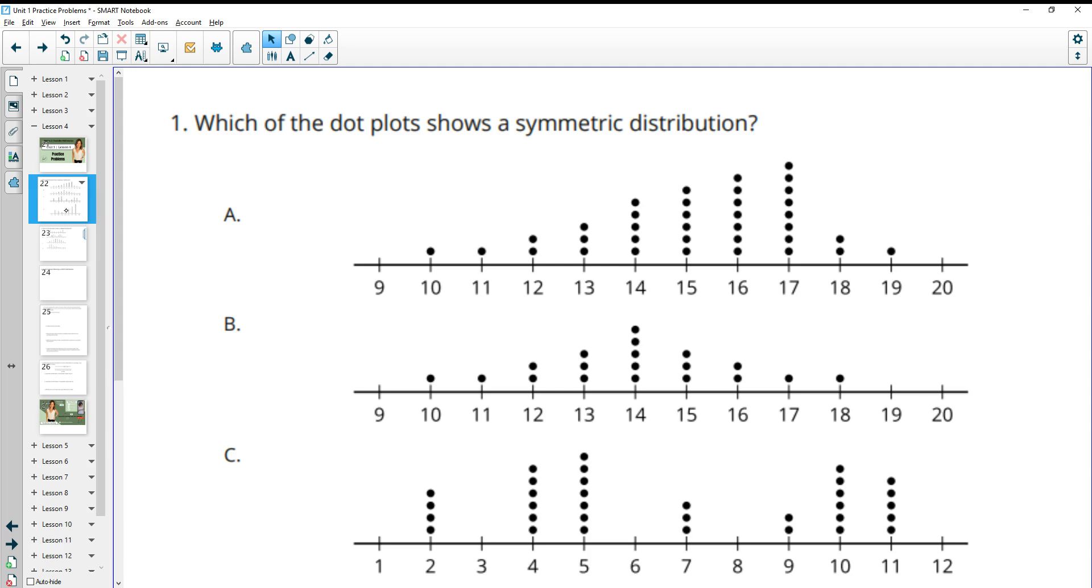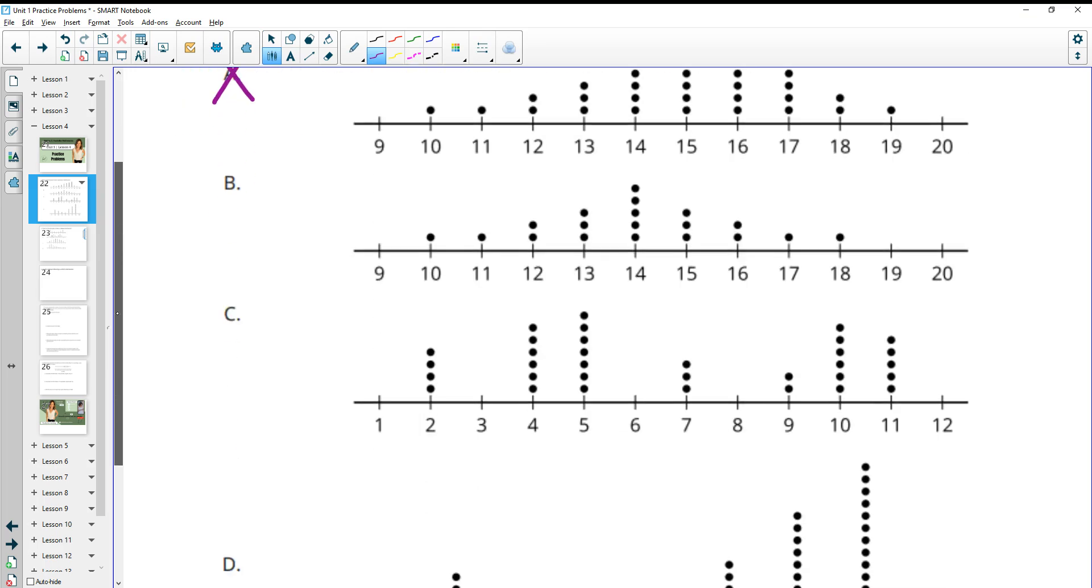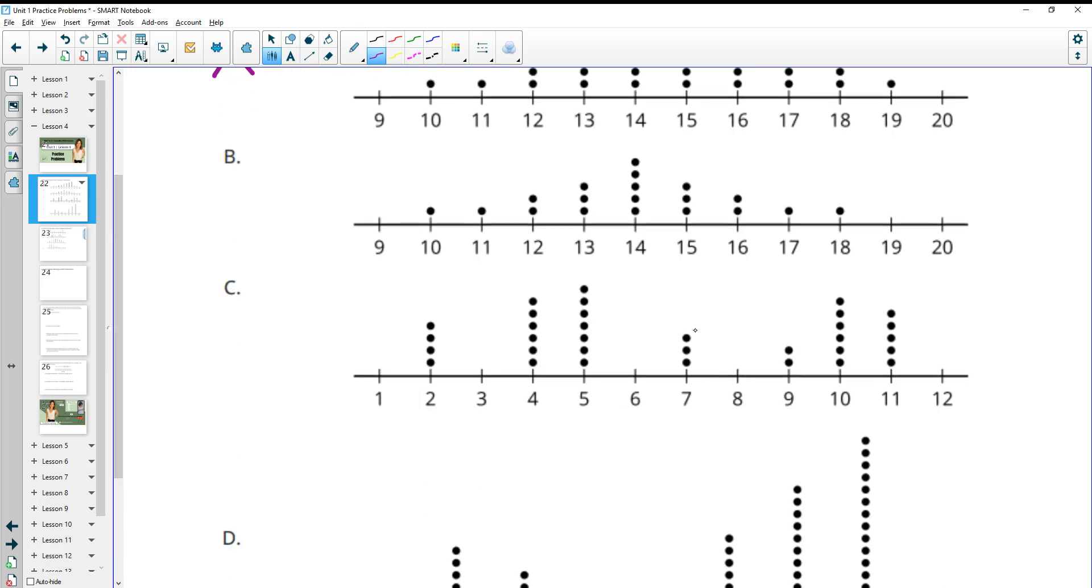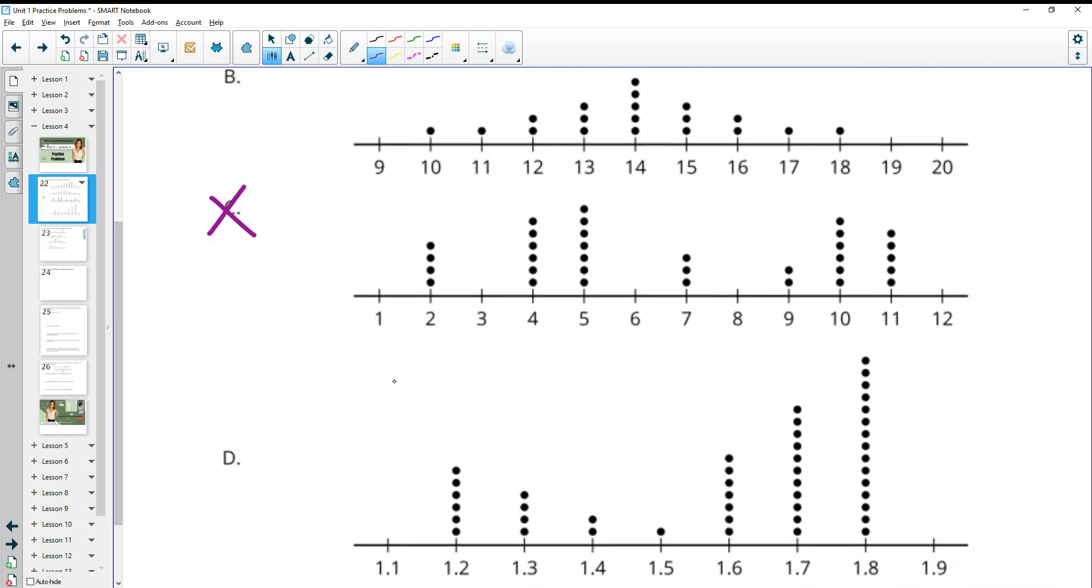Number one asks us which dot plot shows a symmetric distribution. So there's a middle and then things are the same on either side of that middle. This one we see has kind of a big cliff and drop off, so this is not symmetric. C certainly does not look symmetric. And B goes down and back up, but it's way higher on this right side, so that's not going to be symmetric.